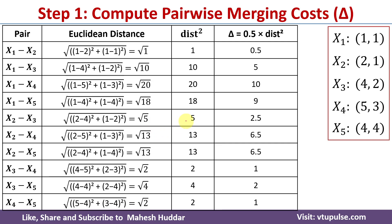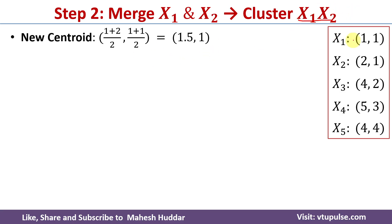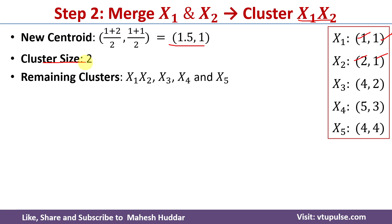Once we find the merging cost for all pairs, we need to check which pair has the minimum merging cost. The pair x1 and x2 has the merging cost 0.5, which is the minimum. So we get the new cluster as {x1, x2}. We then find the new centroid: (1+2)/2, (1+1)/2, which equals (1.5, 1). This cluster has two data points so the cluster size is 2.